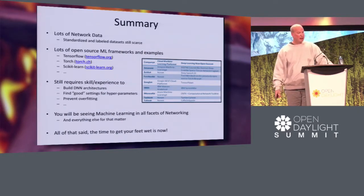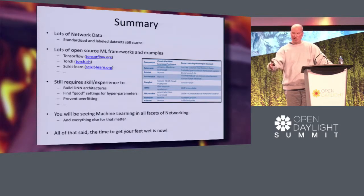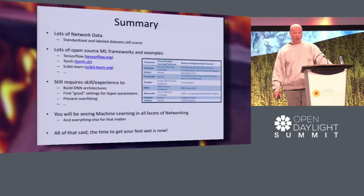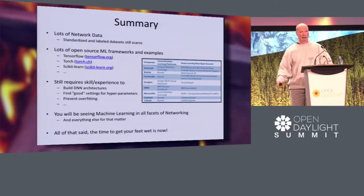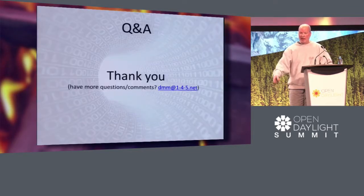Here's the summary: there's lots of network data coming off the networks you build or from the various data sources in the controller. There are lots of open-source frameworks today — TensorFlow, Torch, and many others in this table. But it still requires some skill and experience to build these things. This is going to be a part of your life — you're going to see machine learning in all facets of networking and everywhere else. Now's the time to get your feet wet, because you can write code that does really interesting things in these frameworks without having to spend all the time learning the fancy algorithms from scratch. If you have questions or comments, just send me an email — I'm always available. Thank you.